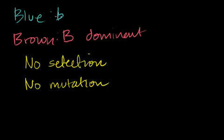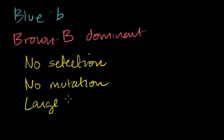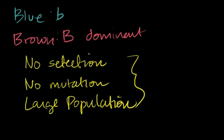I'm also going to assume that there are no mutations, so a chromosome that has a blue allele can't randomly turn into a brown, or vice versa, or turn into a third color. And I'm also going to assume a large population. The reason for all of these assumptions is that I essentially want to have a stable gene pool, at least relative to this gene.